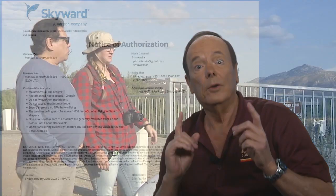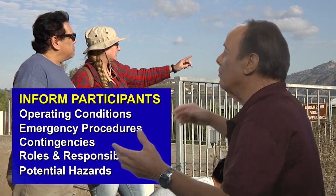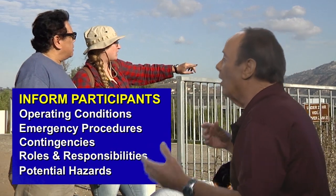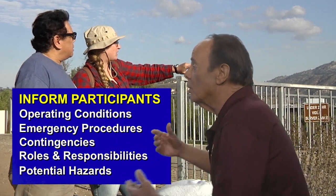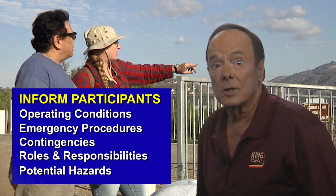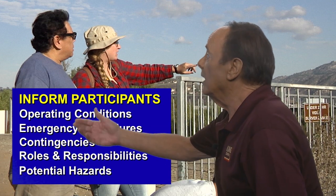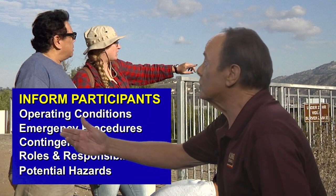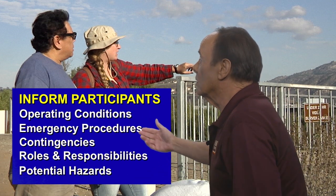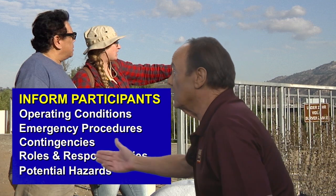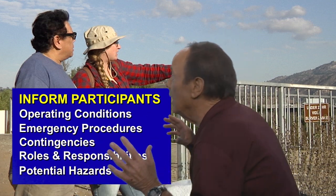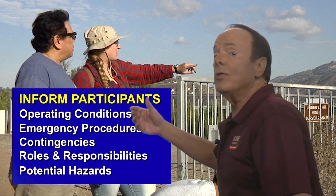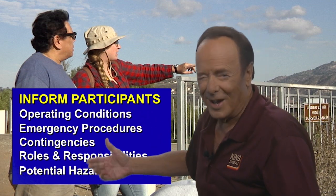Another part of your preflight operations includes keeping all the people involved in the operation informed about what's going on. Various things such as the operating conditions, the emergency procedures, any contingency procedures, and the roles and responsibilities of each person involved, and the potential hazards.